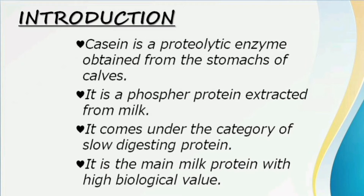We generally take casein from the stomach region. Especially calf stomachs are selected. It is a phosphoprotein which is extracted from milk. Proteins can be fast digesting, medium digesting, and slow digesting. Casein is a slow digesting protein.